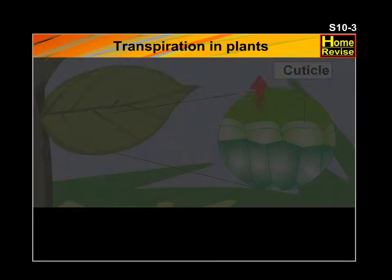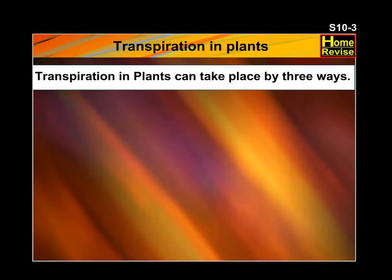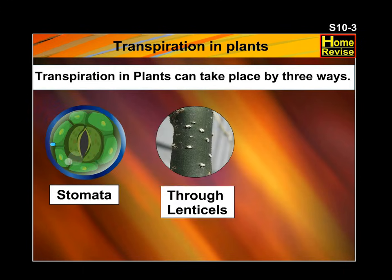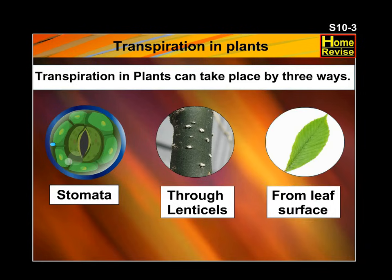We can conclude that transpiration in plants can occur by three types: first, through stomata; second, through lenticels; and third, from the leaf surface.